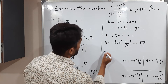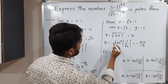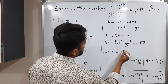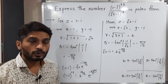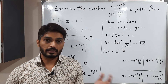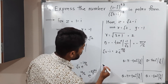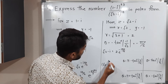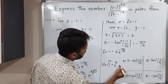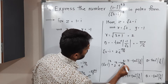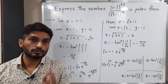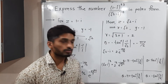Therefore root 3 minus i in exponential form is 2 e raised to i times minus pi by 6. We should not stop here since we need to take the 13th power. Taking the 13th power of both sides: (root 3 minus i)^13 equals 2 raised to 13 times e raised to minus 13 pi i by 6. In this way we have expressed both numerator and denominator in exponential form.